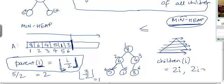So the children of i are going to be at index 2i and 2i plus 1 respectively. This is going to be the left child and this is going to be the right child.